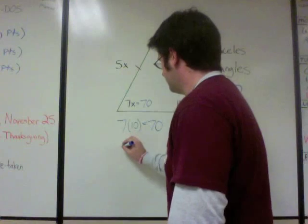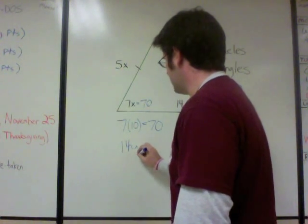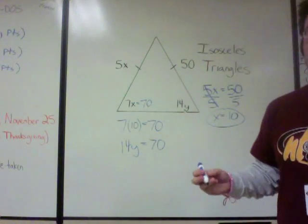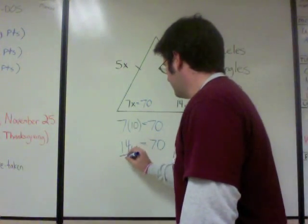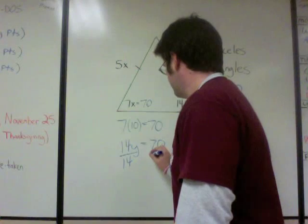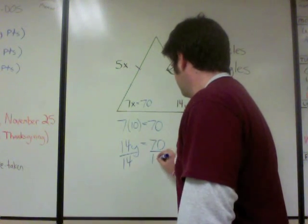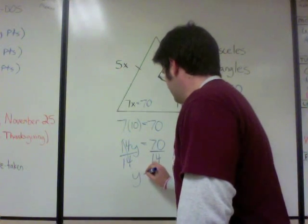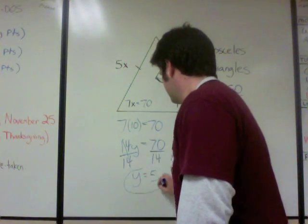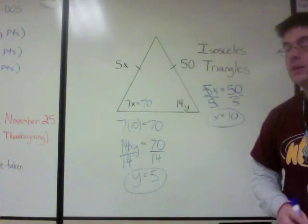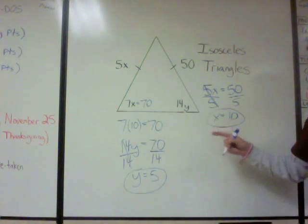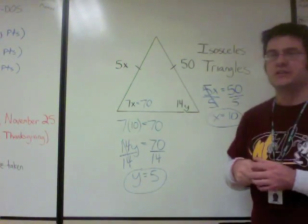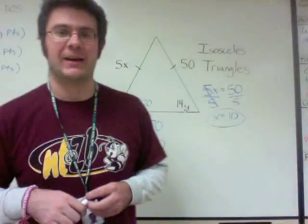So 14y also equals 70. Let's write that down: 14y equals 70. Then we just have to divide both sides by 14. 14 cancels out, and y equals 5. So x equals 10 and y equals 5. There's a quick example problem using the isosceles triangle theorem and some algebra.